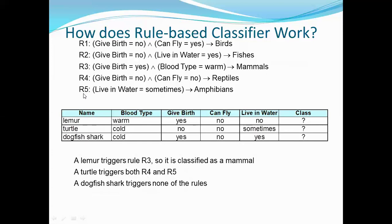For dogfish shark, none of the five rules are satisfied — it will not trigger any rule. This is how the rule-based classifier normally works.